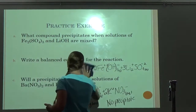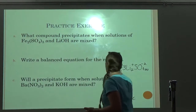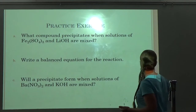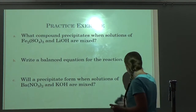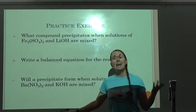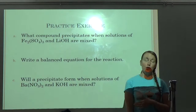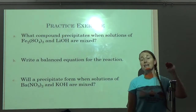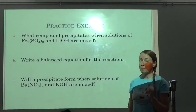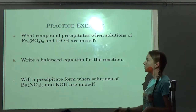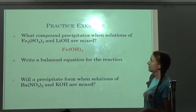Strong bases are defined by the fact that they fully ionize or break apart. Your strong bases are hydroxide ions paired with alkali metals or with the heavy alkaline earth metals — Ca, Sr, Ba — those make up your strong bases.